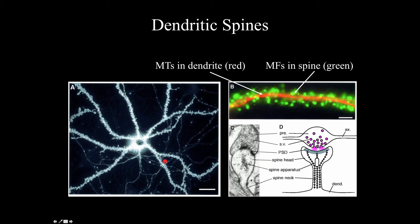Here is a view of the dendritic tree of a neuron showing all the little dendritic spines. Using fluorescent stains — a monoclonal antibody to microtubules in red/orange and monoclonal antibodies to microfilaments highlighting dendritic spines in green — you can see that these dendritic spines are areas where synapses can occur. The electron micrograph shows a presynaptic axon synapsing onto a dendritic spine, and a diagrammatic view illustrates what the synapse might look like.